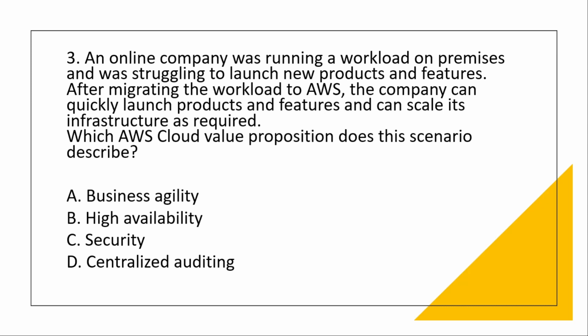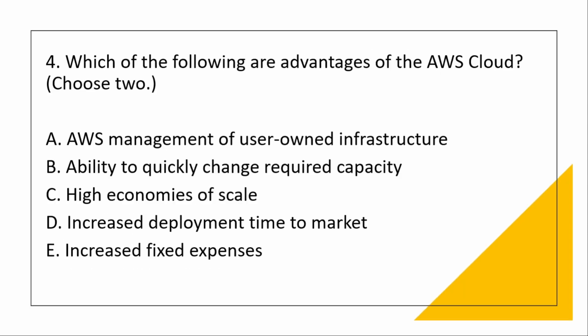An online company was running a workload on-premises and struggling to launch new products and features. After migrating to AWS, the company can quickly launch products and features and scale its infrastructure as required. Which AWS cloud value proposition does this scenario describe? Quickly launching products is an example of agility, so the correct answer is business agility.